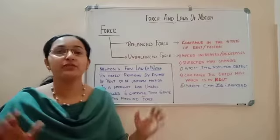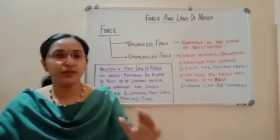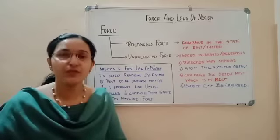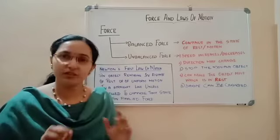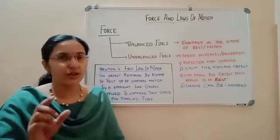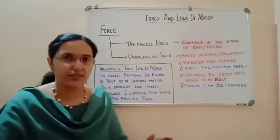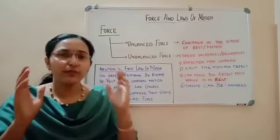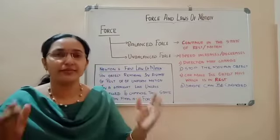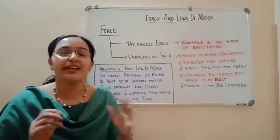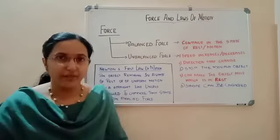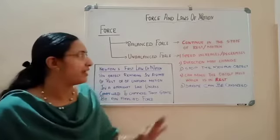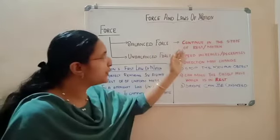A good example is the Earth. The Earth is rotating and moving at the same speed — it is in uniform motion. Its speed does not change, but velocity is changing as its direction changes at every instant. Whatever gravitational force or any other force acts on it, the Earth will not change its speed. That force is known as balanced force.